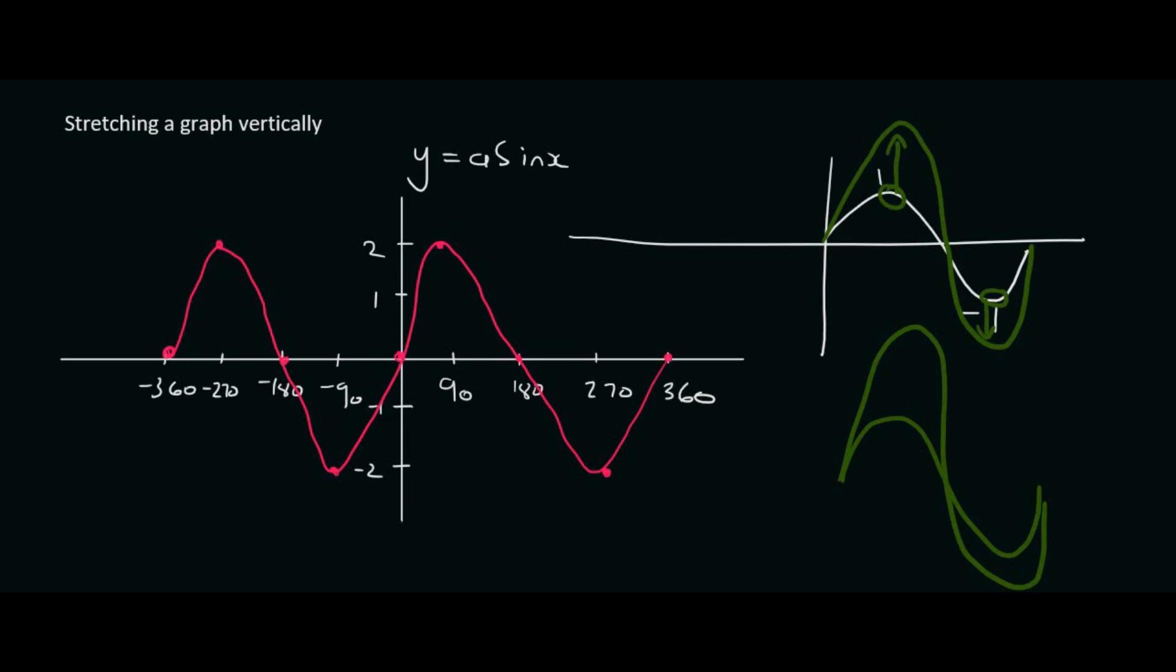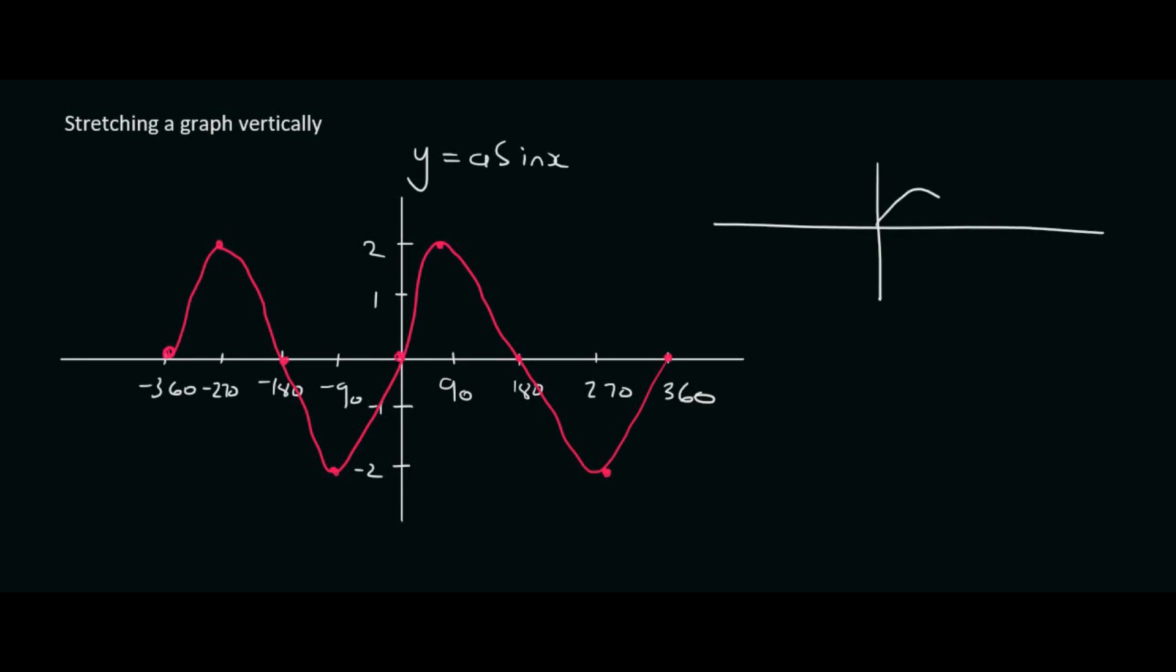Whereas in the previous lessons, we typically took a graph like a sin graph, and then what we did is we took each point and moved it up. Everything went up or we could have also moved everything down.